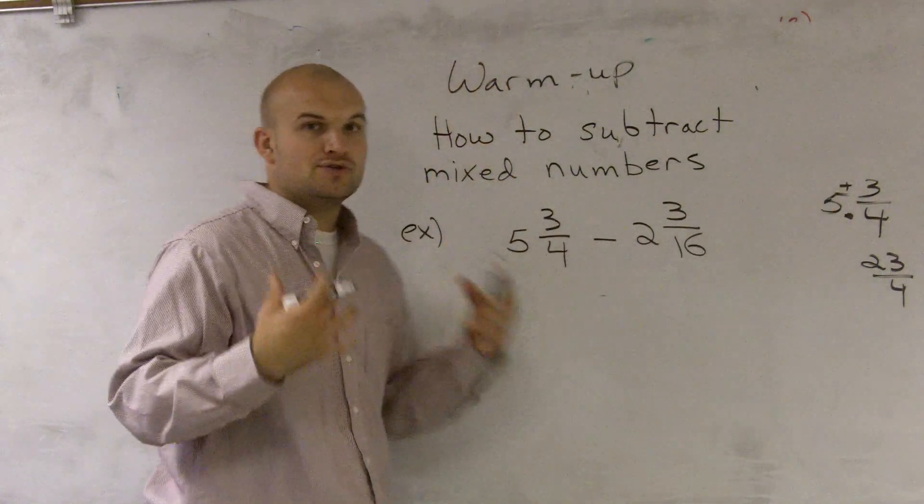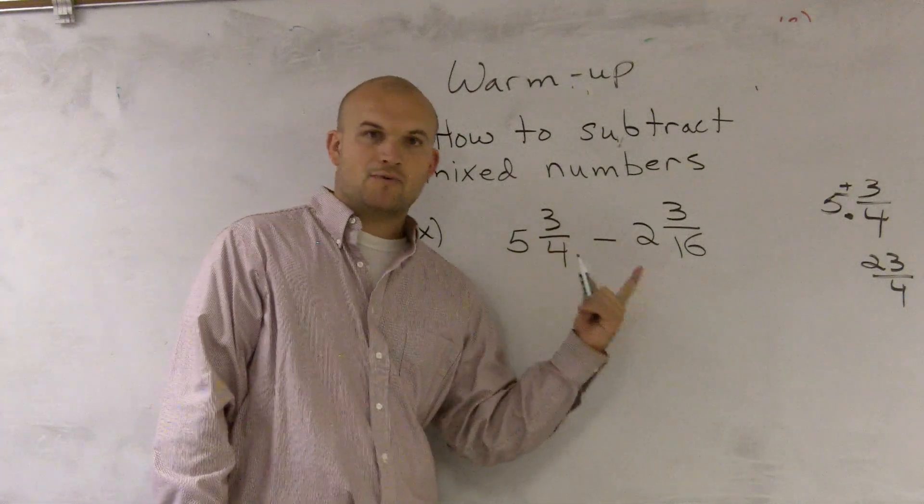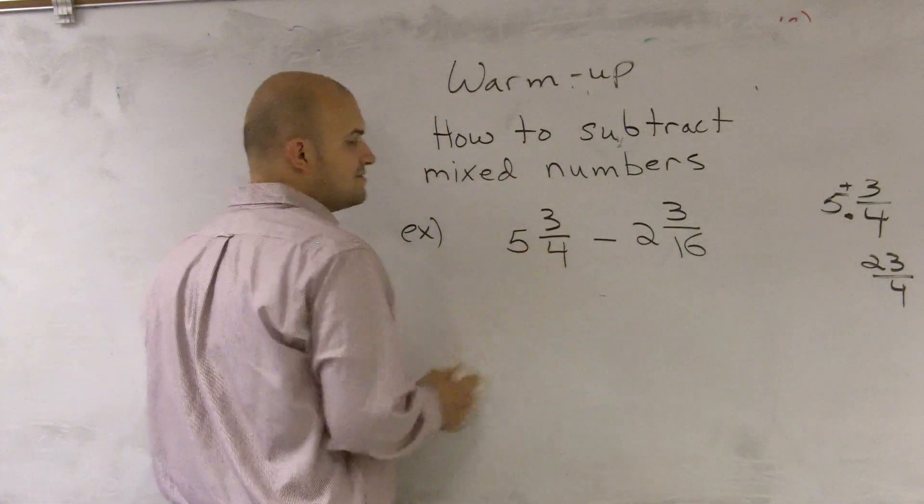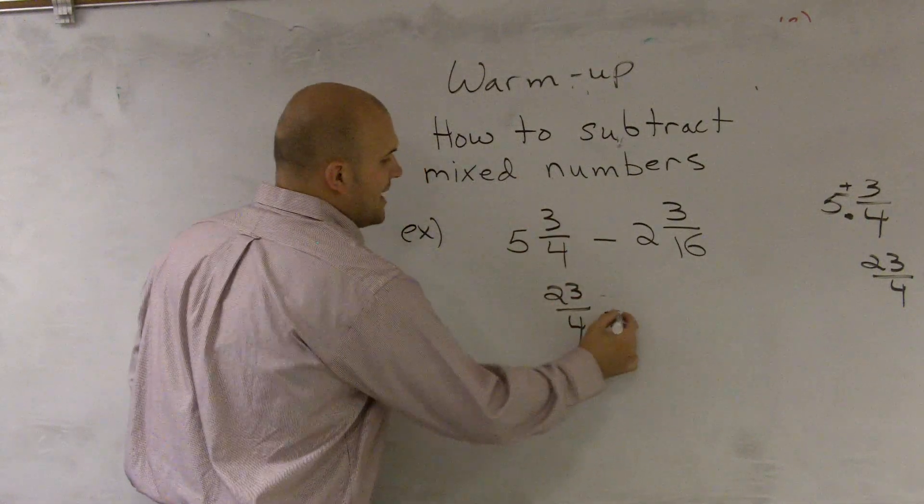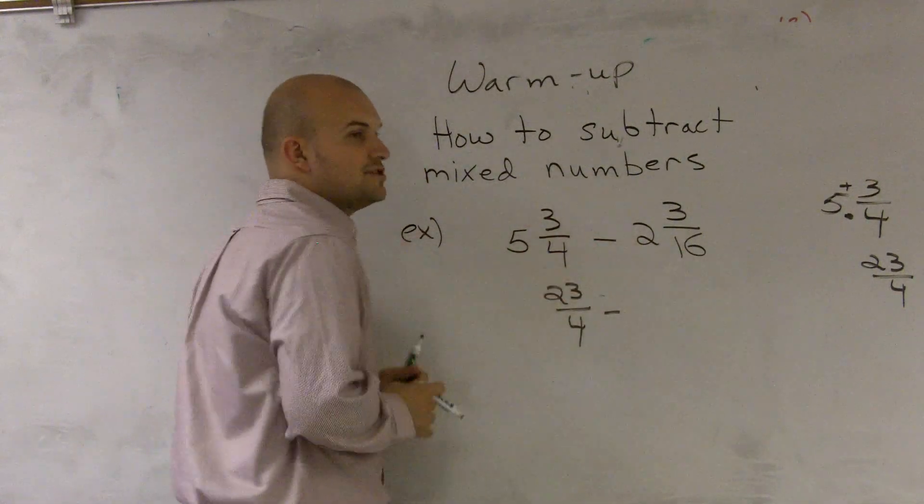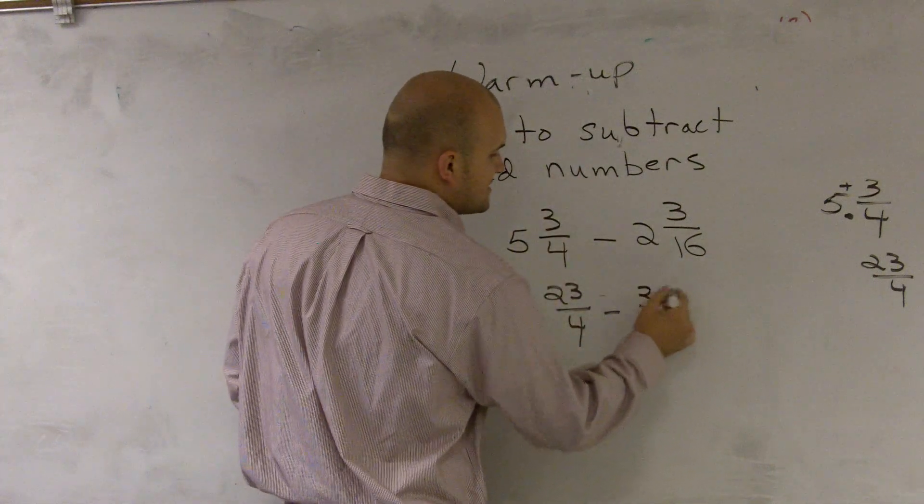So if I'm really used to converting into improper fractions, this would be the method I would want to take. I would say 4 times 5 is 20 plus 3 is 23 fourths, minus 16 times 2 is 32 plus 3 is 35 sixteenths.